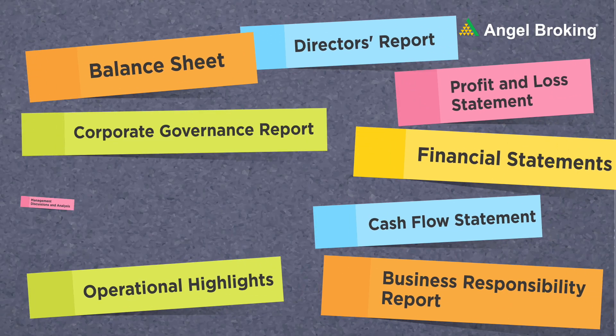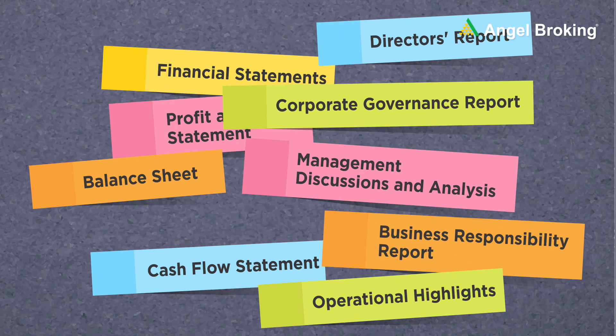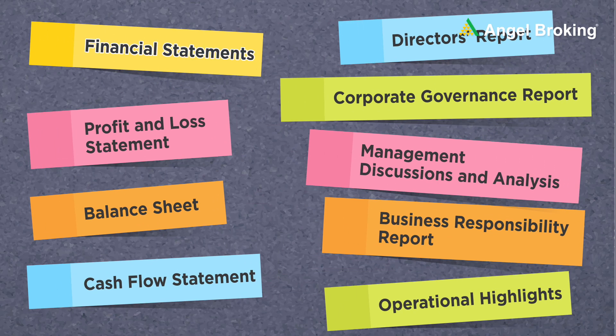An annual report is comprised of 9 sections. Being a shareholder or a potential one, our focus should be on the financial statements, which are the profit and loss account, balance sheet, and cash flow statement.